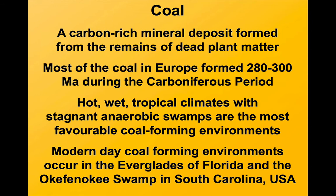During a time when Pangea was coming together, we have a large area of landmass around the equator — and that's our coal-forming belt. The trees had evolved by this stage, the environment was right, and we think perhaps even the bacteria to break down dead tree material hadn't evolved.